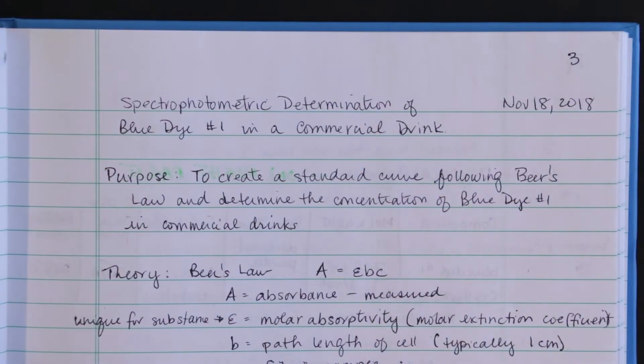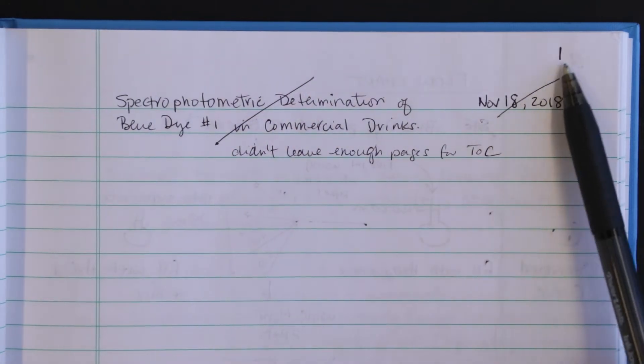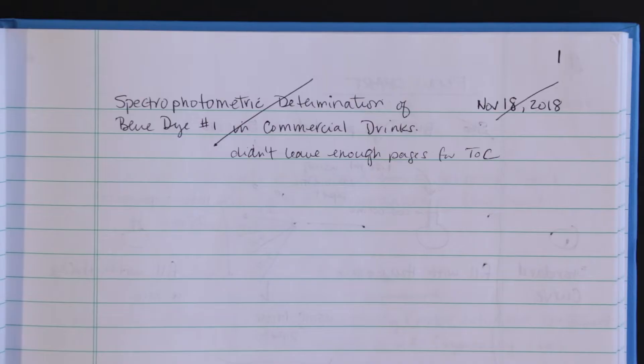Date every page. If you're finishing an experiment at a later time, the new date would reflect that. I made an error, so I drew only a single line through all errors written so they can still be seen. This is proof to auditors that you are not hiding anything.